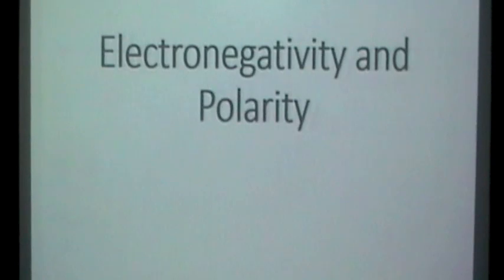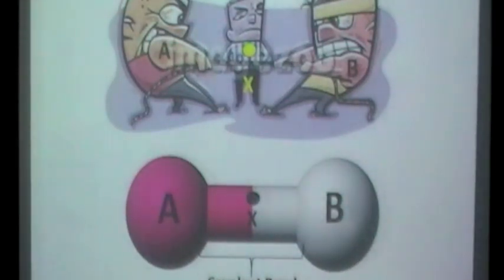I've got a quick video now about electronegativity and polarity. What I want you to think about is a typical single covalent bond. We've got this AB molecule here with the shared pair of electrons between the two atoms, so we've got our regular covalent bond. Now we've got a cartoon here to try and explain what's actually going on.